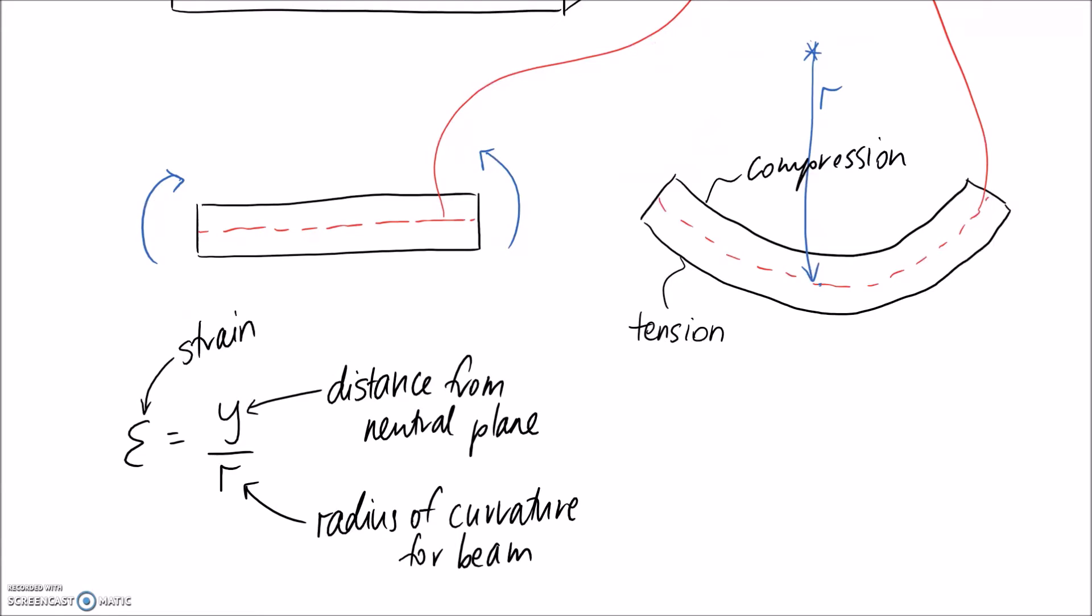So this is how you calculate the strain. If you're sitting on the neutral axis, then your distance from the neutral axis is going to be zero. So if y is zero, your strain is also zero. Thus, by definition, on the neutral axis you have no strain, and it's proven with this equation.